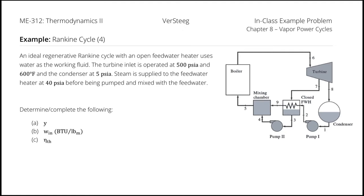An ideal regenerative Rankine cycle with an open feedwater heater uses water as the working fluid. The turbine inlet is operated at 500 psi and 600 degrees Fahrenheit, and the condenser is operated at 5 psi. Steam is supplied to the feedwater heater at 40 psi before being pumped and mixed with the feedwater. Determine Y (the proportion of mass flow rate through the turbine that exits early), the specific work in, and the thermal efficiency.